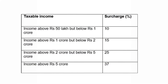Here is a table showing surcharges that would be levied. Income above ₹50 lakh but below ₹1 crore attracts a surcharge of 10 percent over and above the income tax rate. Income above ₹1 crore but below ₹2 crore attracts 15 percent surcharge. Income above ₹2 crore but below ₹5 crores attracts 25 percent surcharge, and income above ₹5 crores attracts a surcharge of 37 percent on top of the income tax rate.